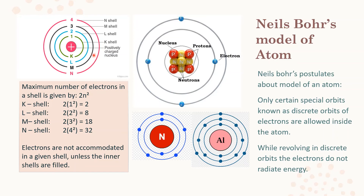Electrons are not accommodated in a given shell unless the inner shells are filled first. If an atom has 3 electrons, they are not distributed as 1 each in K, L, M shells — instead, K shell is filled first with 2 electrons, and the remaining 1 goes to the L shell. An atom is stable when its outermost shell has the maximum (filled) number of electrons. For example, helium has atomic number 2; both electrons fill the K shell, making it stable.